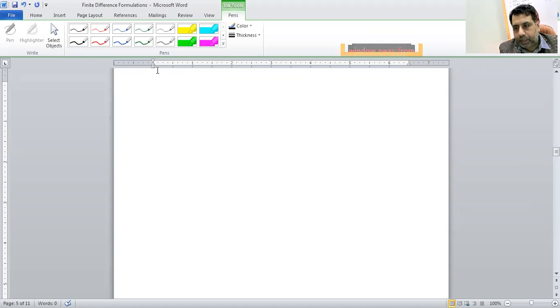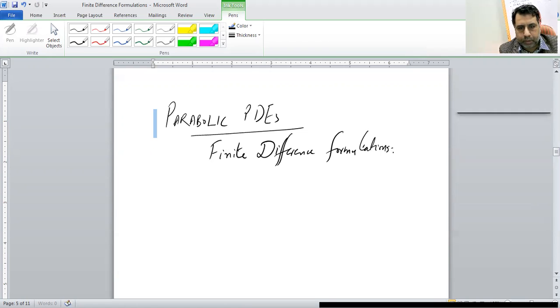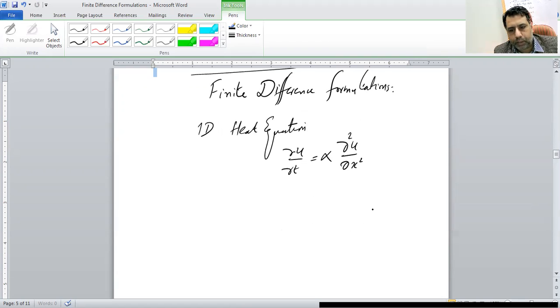Today we are going to discuss finite difference formulations of parabolic partial differential equations. So parabolic PDEs and we are interested in some finite difference formulations. So consider one dimensional diffusion equation or one dimensional heat equation.